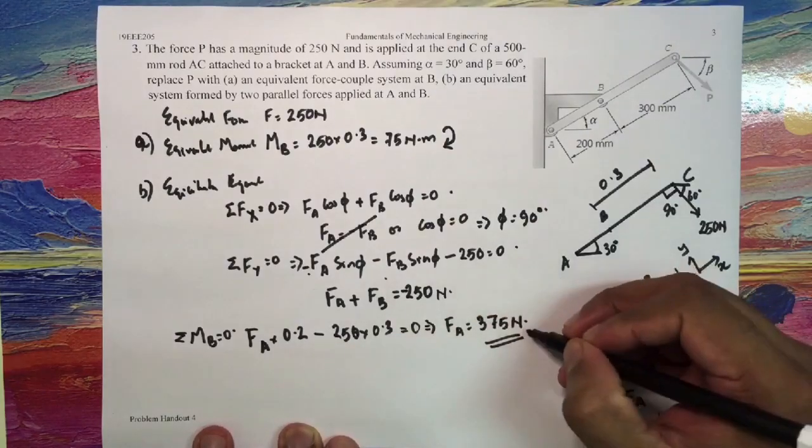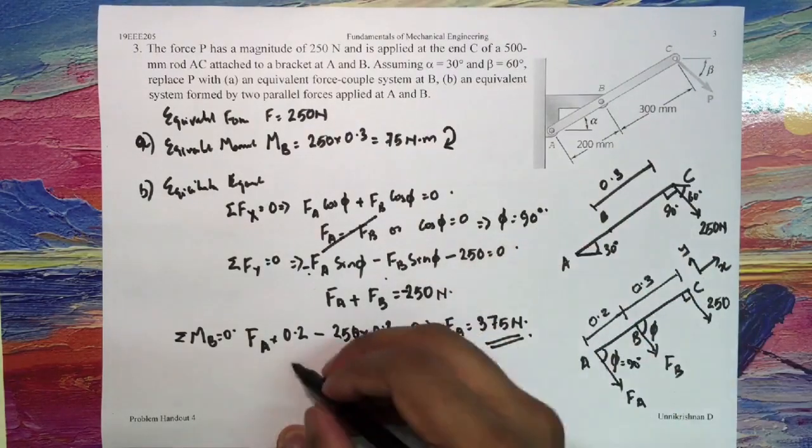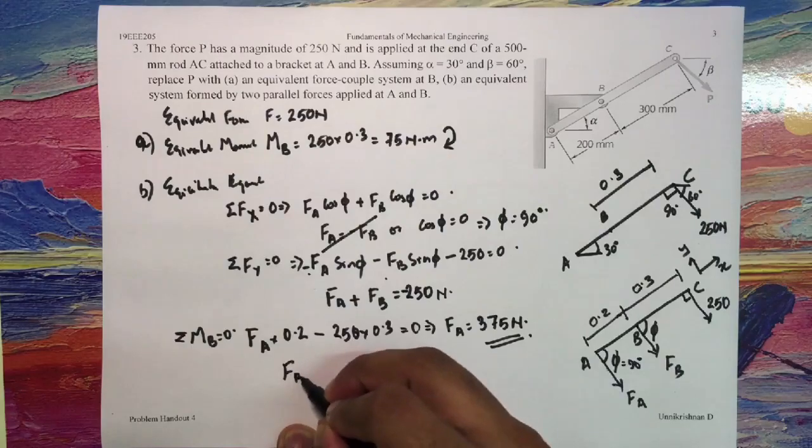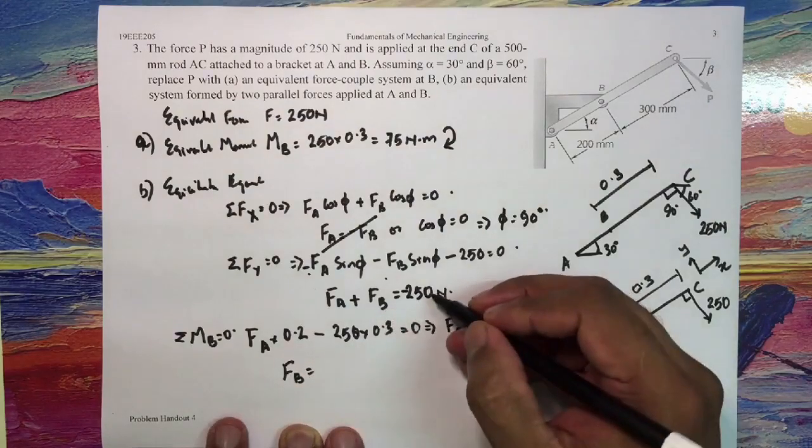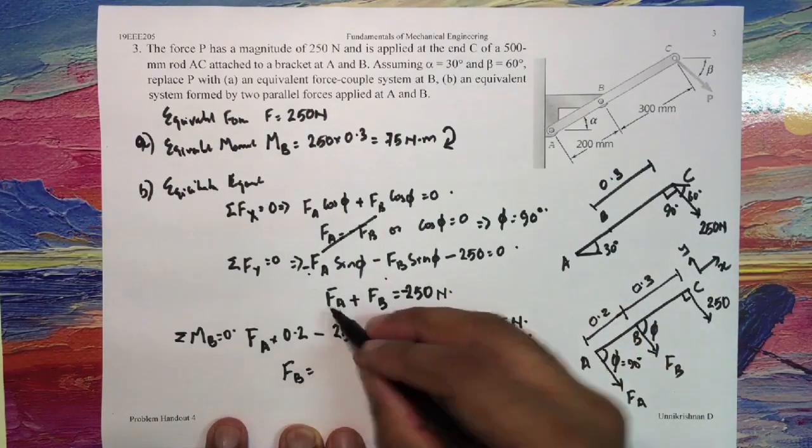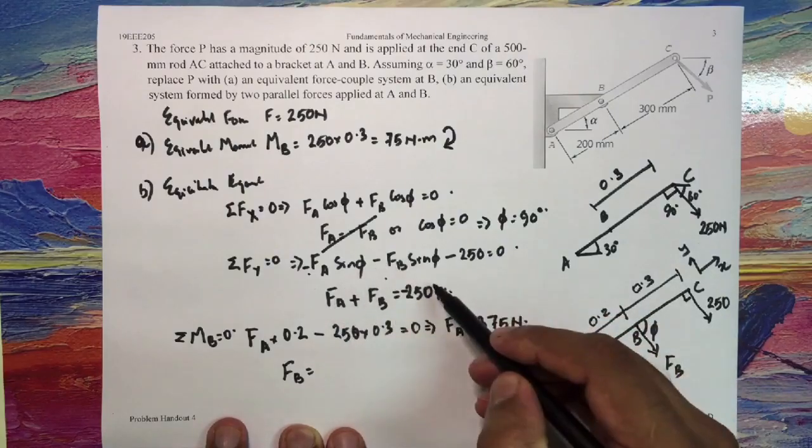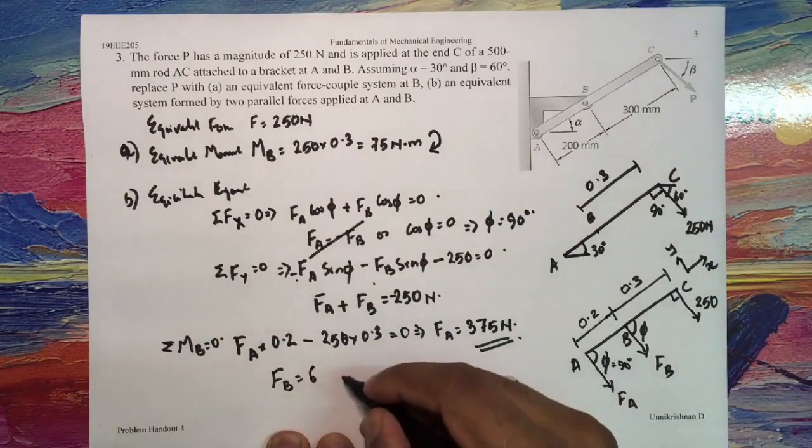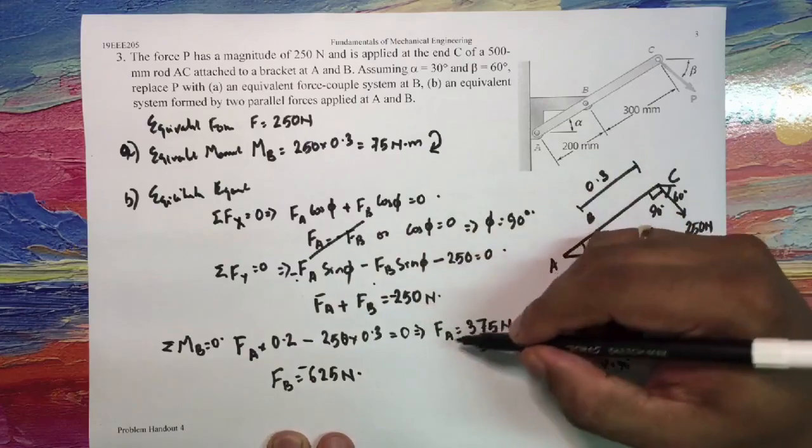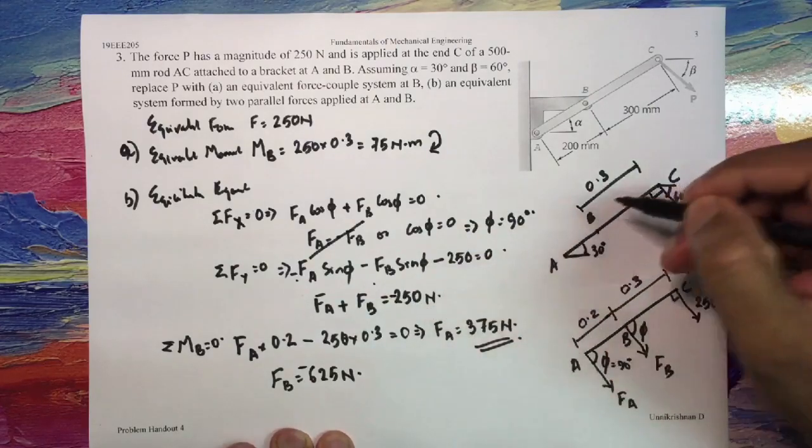Now substitute this over here. What do I get? FB is equal to minus 250, and here it is 375. It goes into the other side and it turns out to be 625 Newtons.